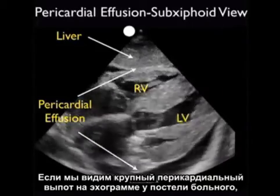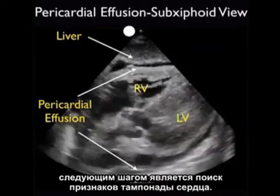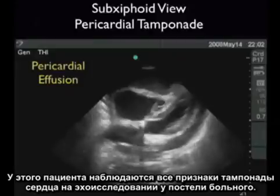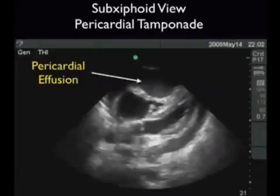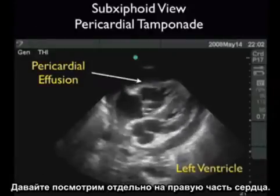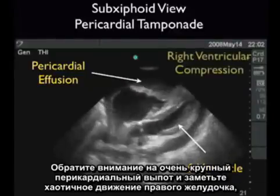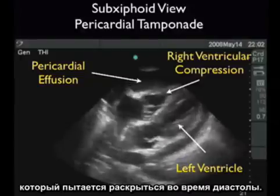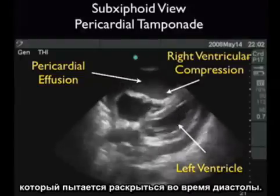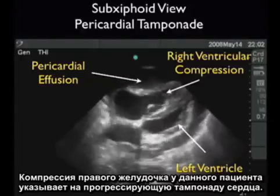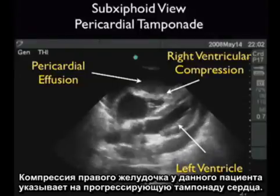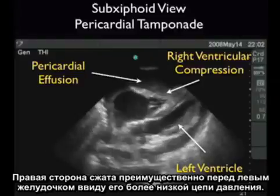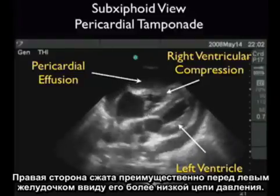If we see a large pericardial effusion on bedside echo, our next move is to look for signs of cardiac tamponade. Here's a patient who manifests all the signs of cardiac tamponade on bedside echo. Let's look specifically at the right side of the heart. Notice the very large pericardial effusion and note the chaotic movement of the right ventricle as it struggles to open during diastole. The compression of the right ventricle in this patient is consistent with advanced cardiac tamponade. The right side of the heart is preferentially compressed before the left ventricle due to its lower pressure circuit.